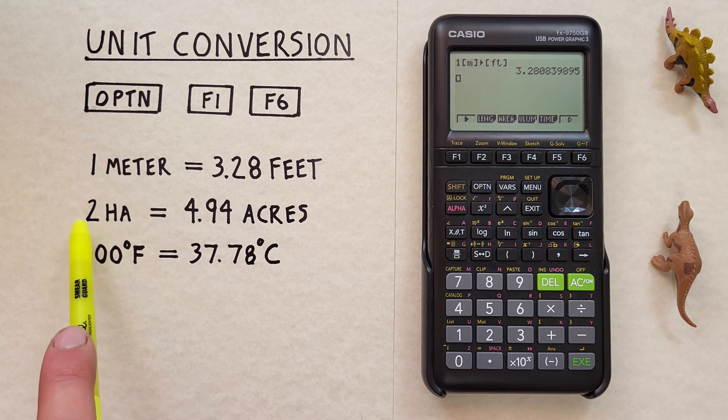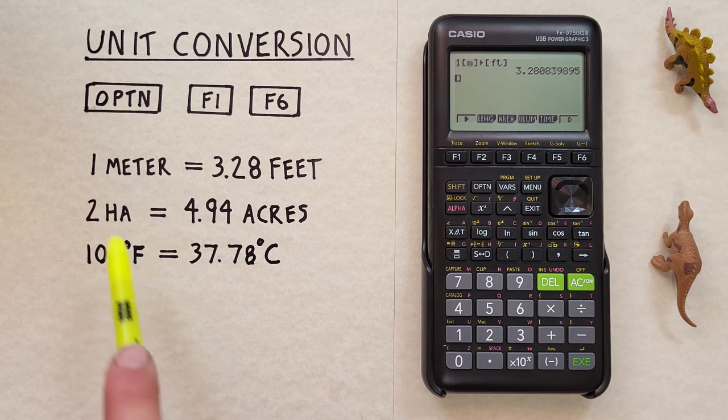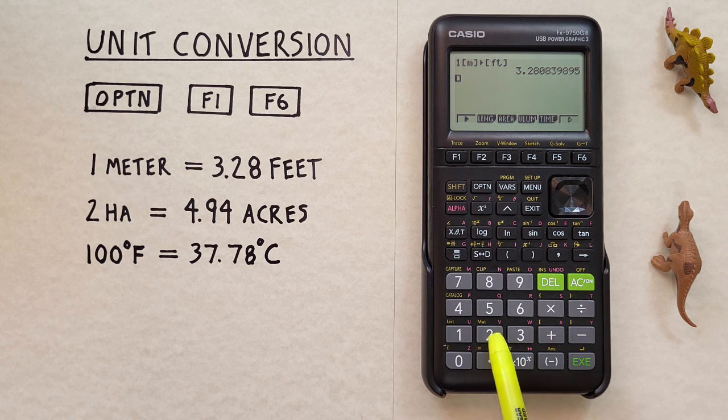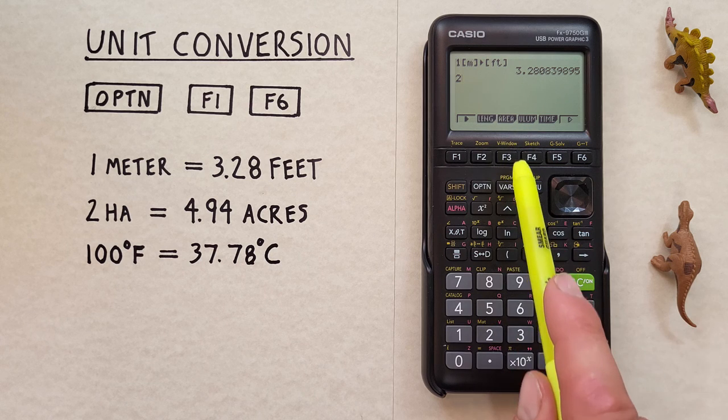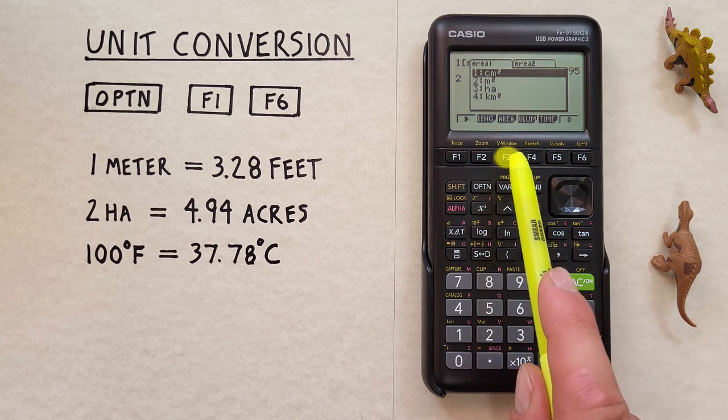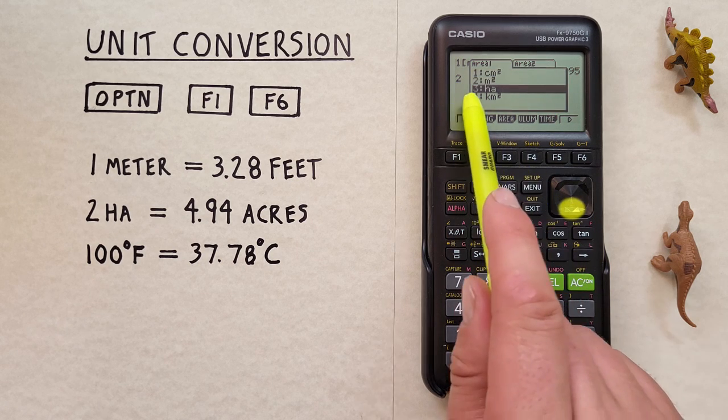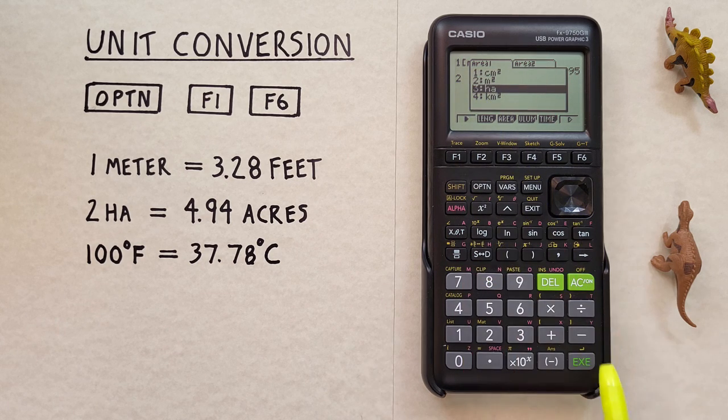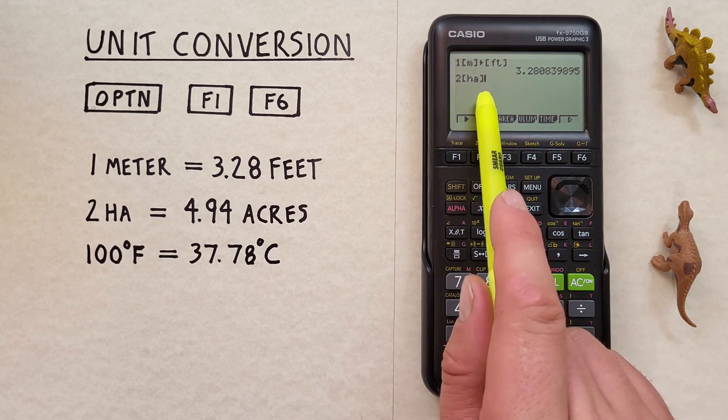What about area? If we're given two hectares what is that in acres? Again we start by pressing the 2 for the hectares and then we want to choose area so we'll press F3 there. We then want to choose hectares so we highlight it and press EXE. We have two hectares.